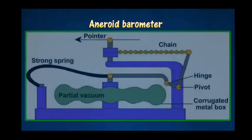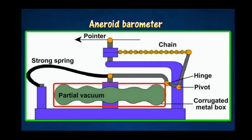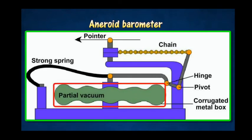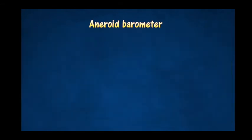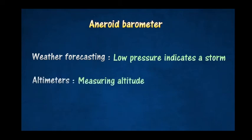An aneroid barometer is used more often than a mercury barometer because it contains no liquid and can be carried conveniently. The expansion and contraction of a metal box actuates a lever system. When atmospheric pressure drops, the metal box expands; when it increases, the box contracts. The movements are magnified by levers which cause a pointer to move over a calibrated scale. The aneroid barometer is commonly used for weather forecasting and also as an altimeter in aircraft, since air pressure decreases as altitude increases.